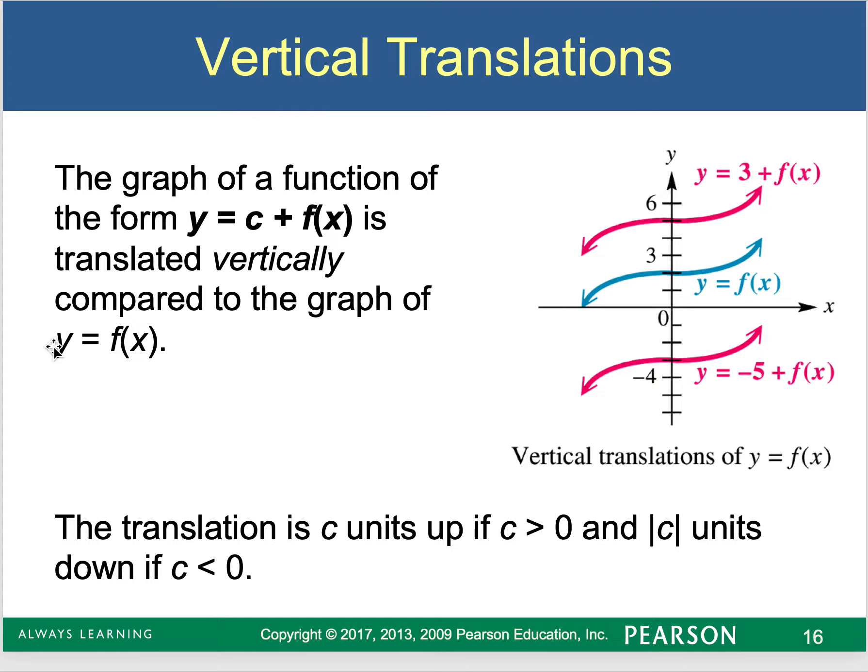Vertical translations, though, aren't too bad. You're just moving the graph up or down, and it moves in the same direction. So if I plus two, that means move up two.